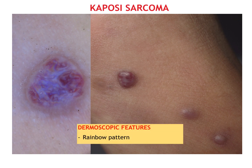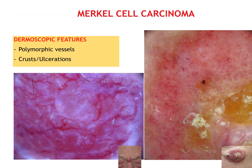Kaposi's sarcoma is a malignant vascular tumor often occurring on the extremities of the elderly. Its recognition could be facilitated by dermoscopy, revealing a bluish-reddish coloration, the rainbow-like appearance, scale and collarette. Merkel cell carcinoma is a rare neuroendocrine malignancy of the skin with high rate of recurrence, metastasis and mortality. It often affects the head and neck region, and its dermoscopy overlaps that of amelanotic melanoma; the most frequent features are polymorphic vessels and crusts or ulcerations.